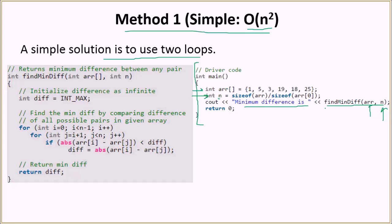The return value is printed as the minimum difference. Inside the findMinDifference function, which takes the input array and its size as arguments, we initialize the difference as infinite — that would be INT_MAX. We are first initializing it to the maximum value and then narrowing it down. We find the minimum difference by comparing the difference of all possible pairs — this is a brute force algorithm trying every possible combination.